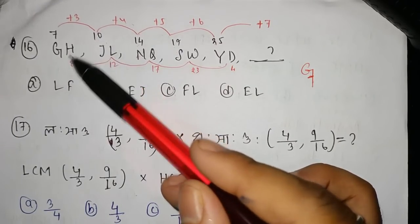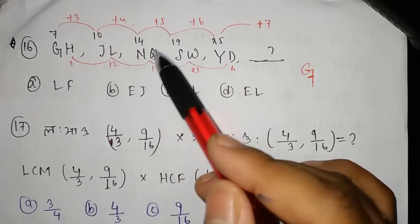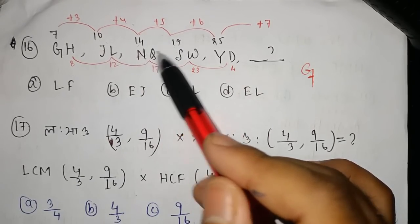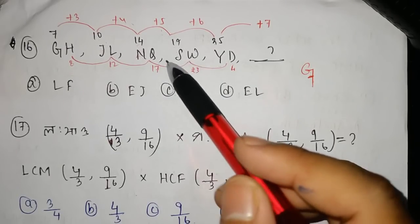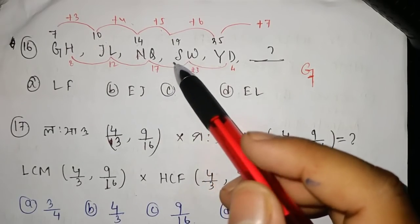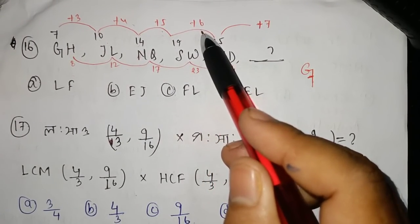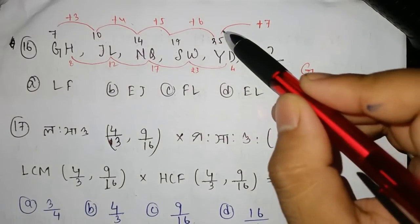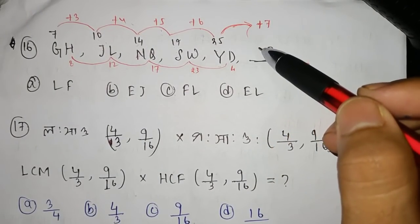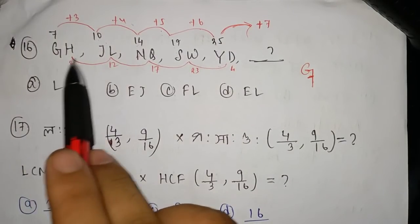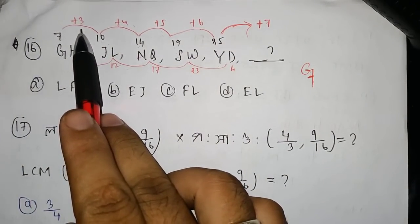The first part of the question: J to N skips 5 alphabets, and N to S also skips 5 alphabets. Then S to Y skips — and next we skip 7 alphabets. J plus 3 means skip 3 alphabets.